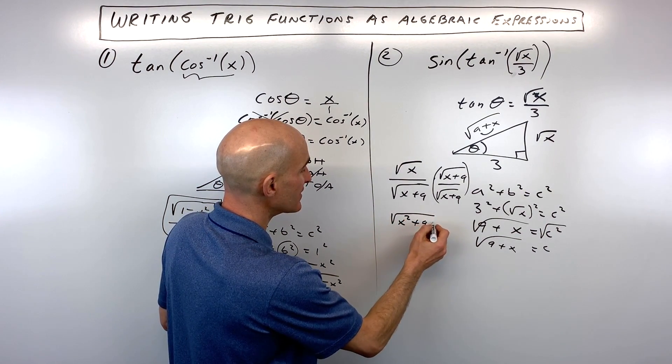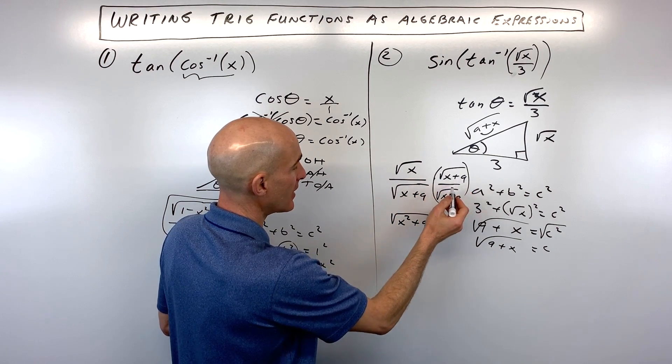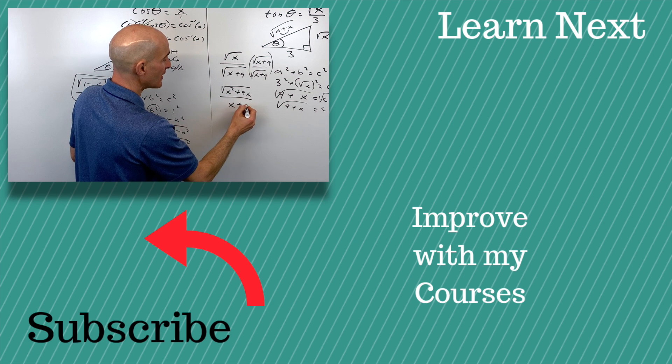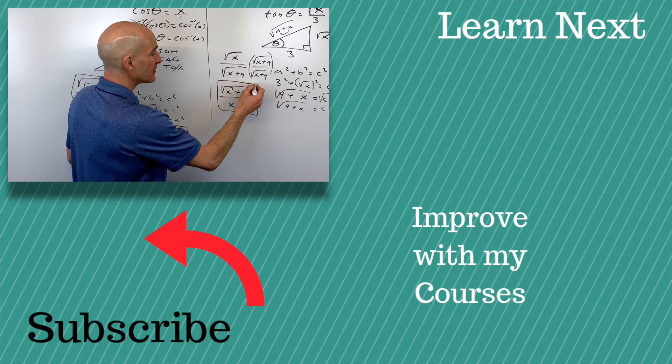So it's the square root of x squared plus nine x. I'm just multiplying these together, distributing, all divided by square root of x plus nine times square root of x plus nine is just going to be x plus nine. And you've got it.